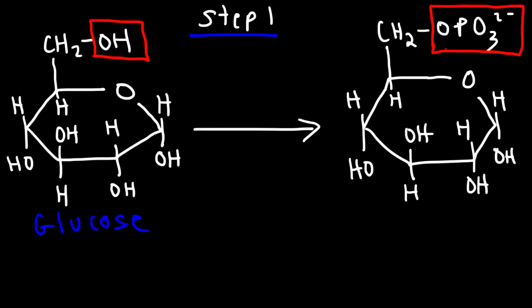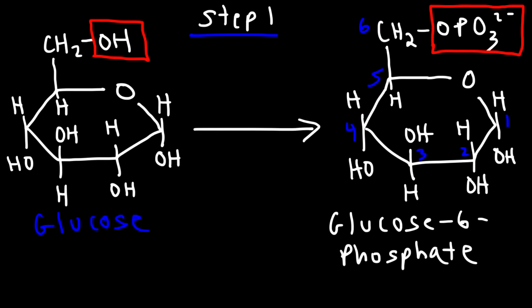The process of adding a phosphate group to a molecule is known as phosphorylation. We're phosphorylating glucose to create glucose-6-phosphate (G6P). The phosphate comes from a molecule of ATP, which is converted to ADP. ATP is adenosine triphosphate with three phosphate units; ADP is adenosine diphosphate with two. An enzyme helps transfer that phosphate group from ATP to the glucose acceptor molecule, giving us glucose-6-phosphate. That enzyme is called hexokinase.